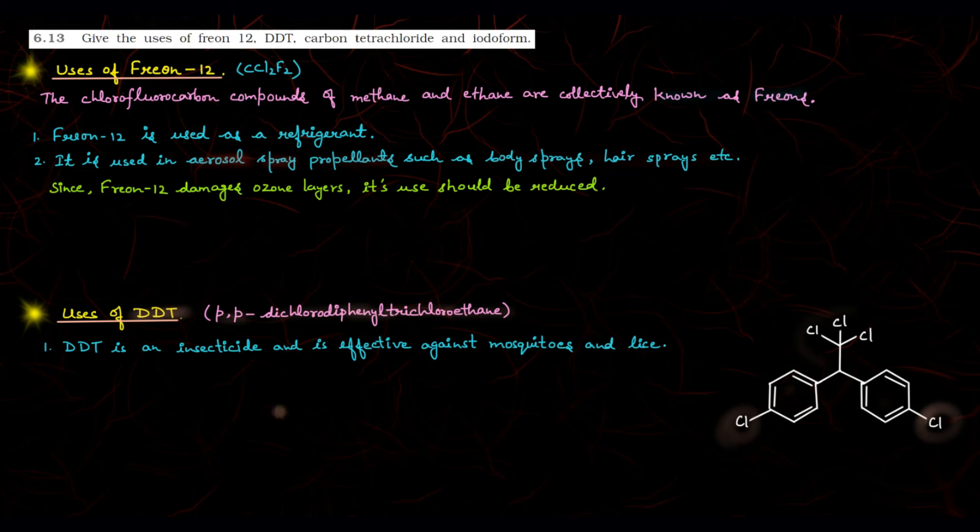Where do we use DDT? So, DDT is an insecticide and is effective against mosquitoes and lice. The mosquitoes that spread malaria - against them DDT is used as insecticide. World War II when it happened, at that time it was used extensively so that malaria would not occur.